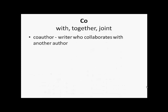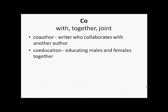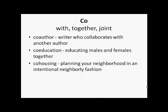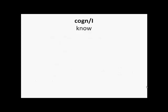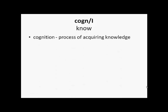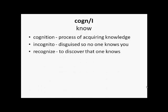'Co' means with, together or joint. So co-author is a writer who collaborates with another author. Co-education is educating males and females together. Co-housing is planning your neighborhood in an intentional neighborly fashion. 'Cogn' or 'cogni' means to know — so cognition is the process of understanding, knowing or acquiring knowledge. Incognito means disguised so that no one would recognize the person. Recognize means to discover that one knows.